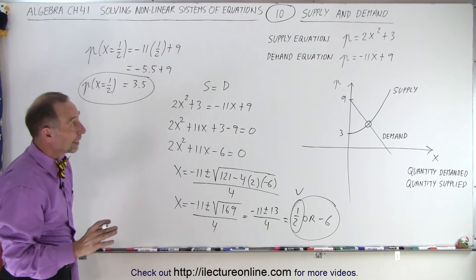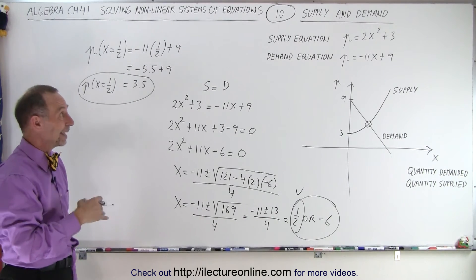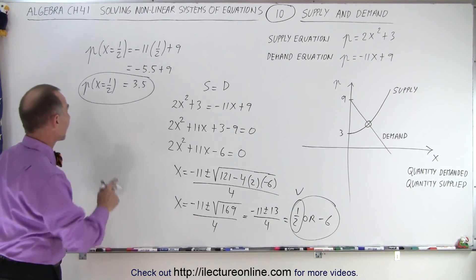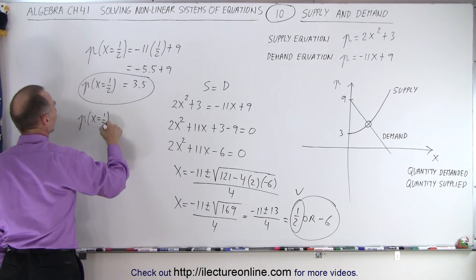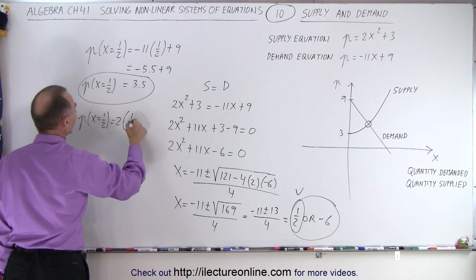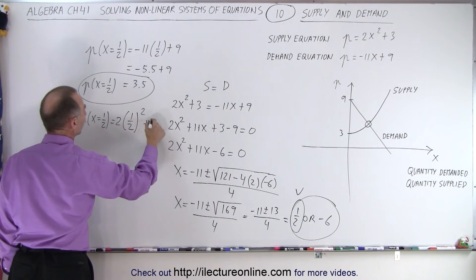Now, we need to also plug that into the other equation to make sure we get the same result. Otherwise, we made a mistake. So the price, when X equals 1 half, is equal to 2 times 1 half squared plus 3.